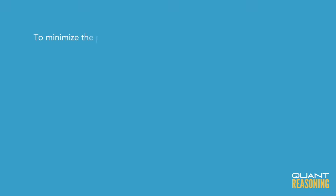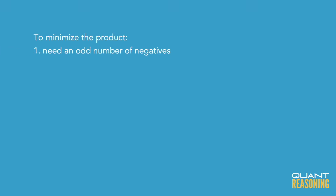If we want to minimize the value of the product — make it as small as possible — we'll definitely want to have an odd number of negatives so that we end up to the left of zero.